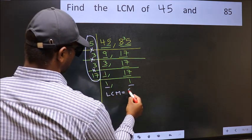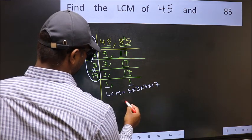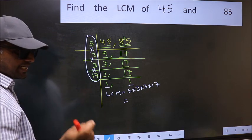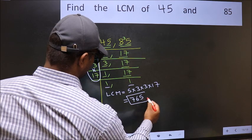That is 5 into 3 into 3 into 17. When we multiply these numbers, we get 765 as our LCM.